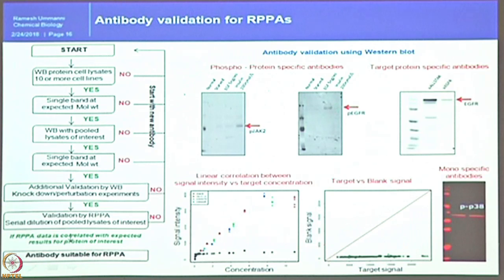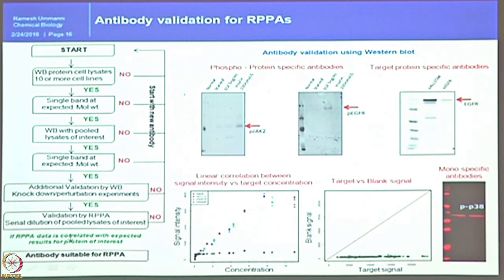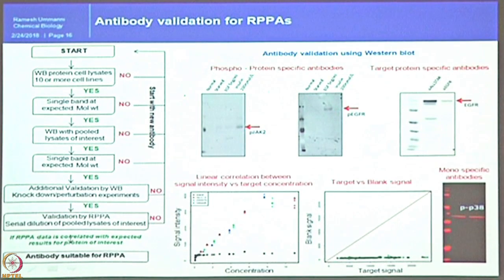After passing all Western blot validations, the antibody is validated by the reverse phase protein array approach. A small pool of lysates is printed on glass slides and probed with the antibody to see if it detects signals. When plotting concentration versus signal intensity, the signal should increase with increasing concentration while blank signal stays at baseline. If target signal is too close to blank signal — no linearity — the antibody is dropped at this step.